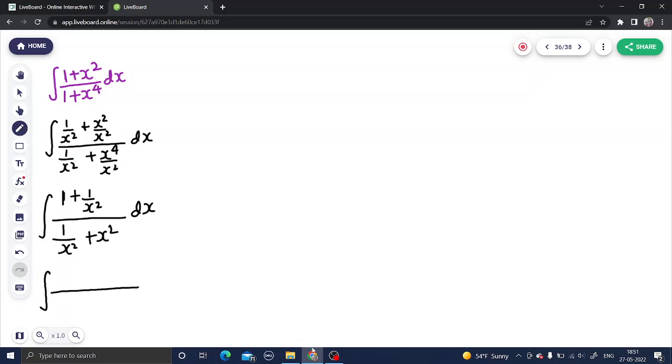Now if you look at this carefully, first come to denominator. Denominator is basically x² plus 1 upon x². If I subtract 2 and add 2, no problem will be there. Now write the numerator.